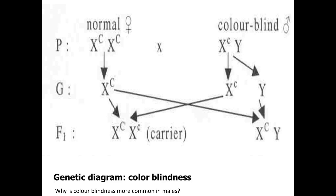One thing to add about protein synthesis: when DNA becomes mRNA, the base T is no longer used. Instead of ATGC, the bases in mRNA are AUGC. That is all for inheritance. I hope you enjoyed the video and learned something — see you in the next video. Bye-bye!